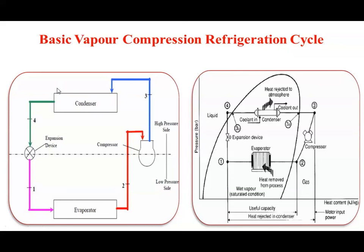As the high pressure, high temperature refrigerant passes through the condenser, it rejects its latent heat of condensation to the atmosphere or cooling medium and gets converted into liquid. At the end of the condenser — point 4 — the state is high pressure, high temperature liquid. This liquid refrigerant is then passed through the expansion device, such as a capillary tube or solenoid expansion valve. In a domestic refrigerator, a capillary tube is used. As the high pressure liquid passes through the expansion valve, it partially evaporates, and cooling occurs.